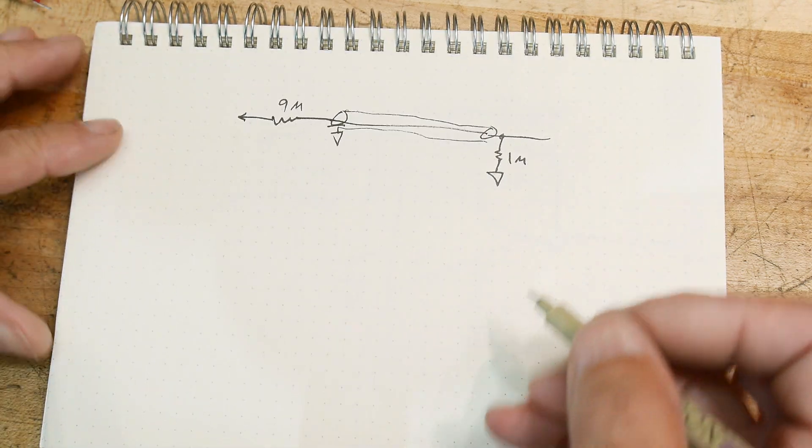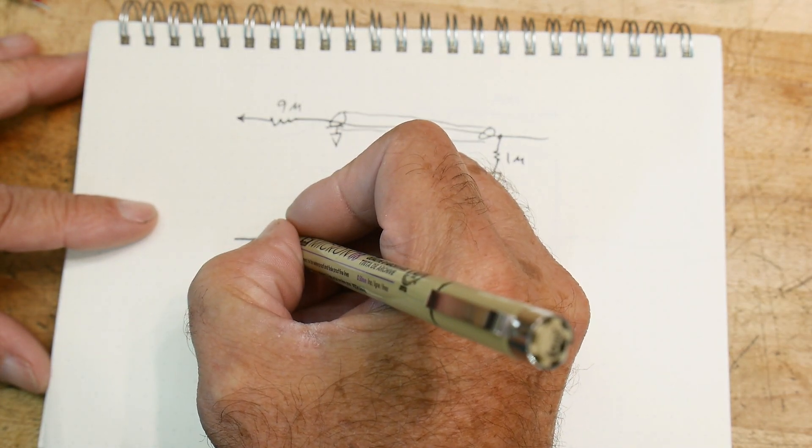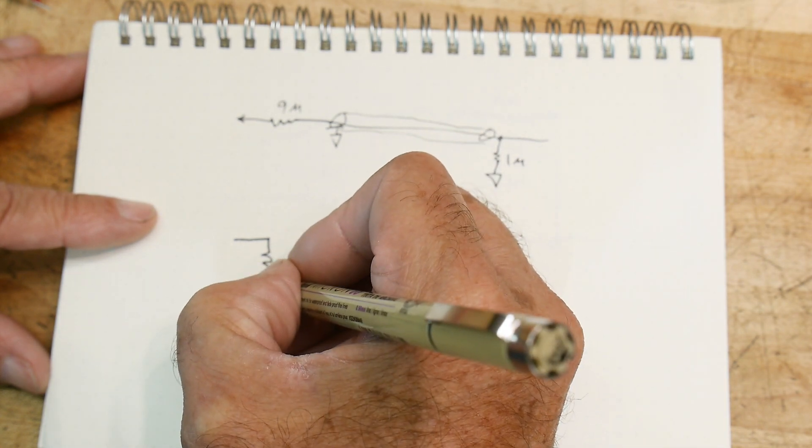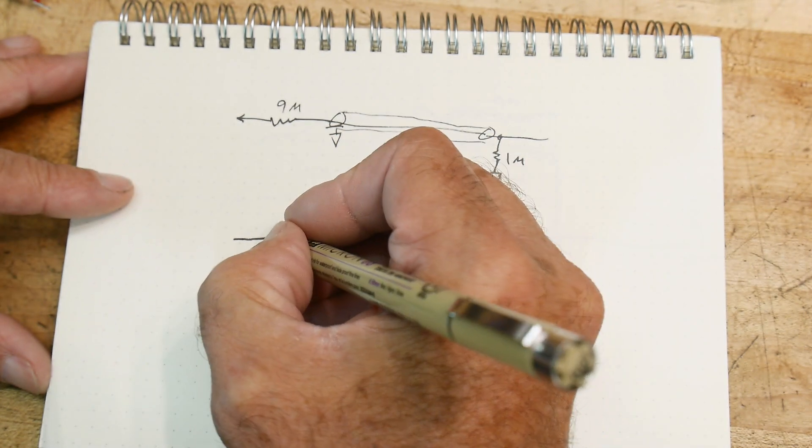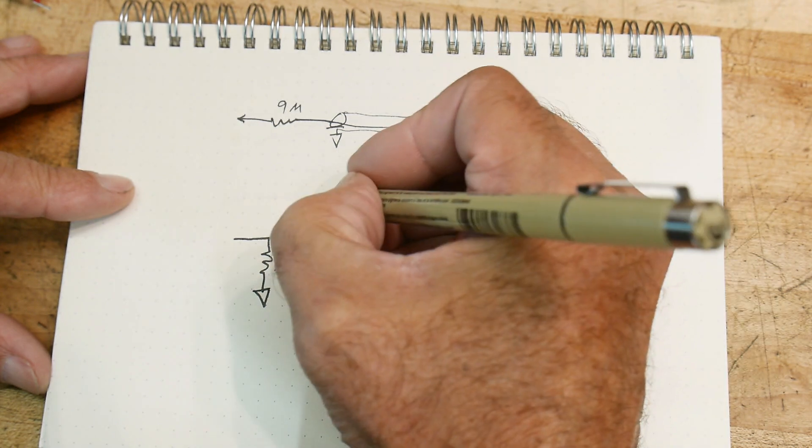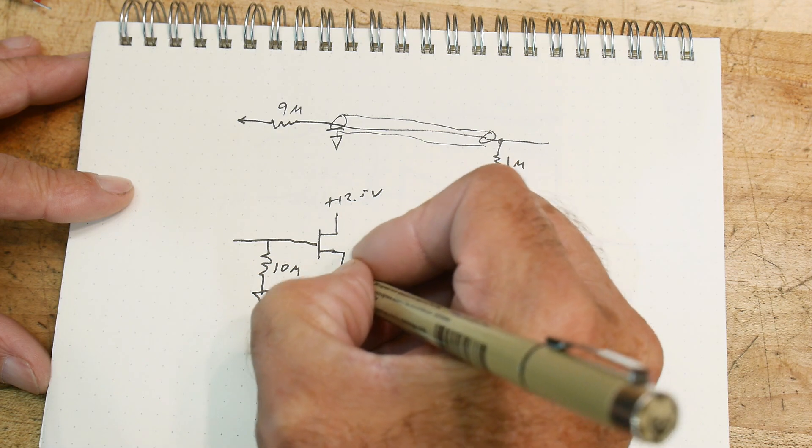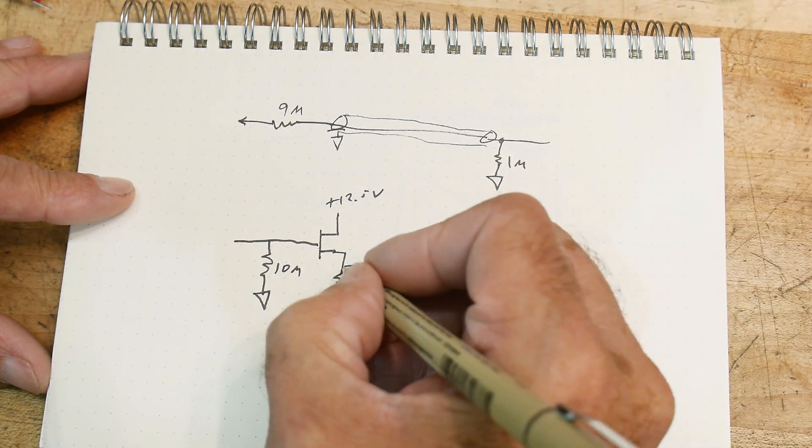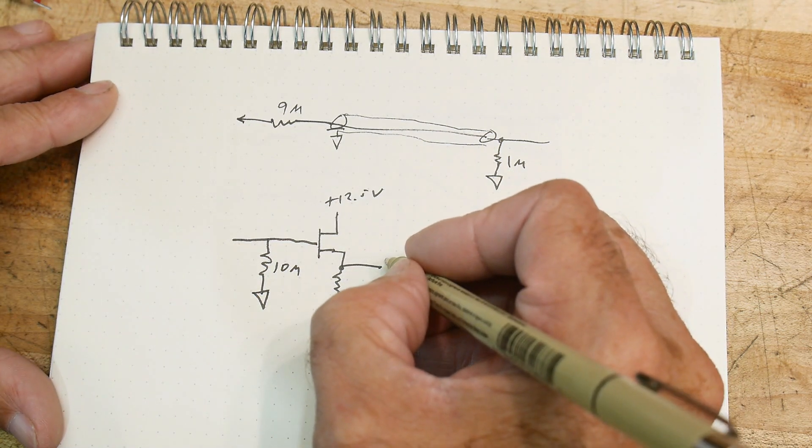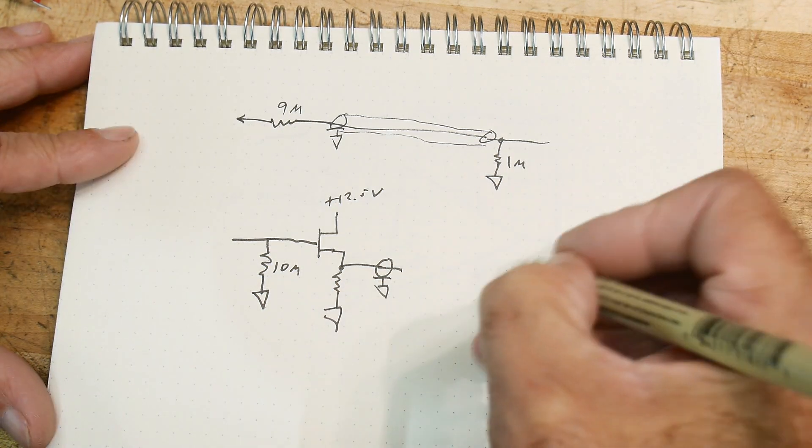All right, so the other active probe looks like this. There's 10 megohms to ground right away, and that goes into an FET, plus 12.5 volts, and bottom looks something like this. There's some resistor here, and then it goes into the coax.